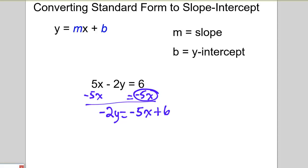And y is not by itself yet. We still got to get rid of this negative 2. And the way we get rid of it is to undo what it's doing. It's multiplying with y. So we're going to undo that with a divide by negative 2. And I'm going to divide negative 2 across the board here.